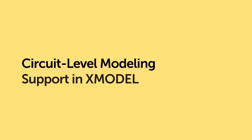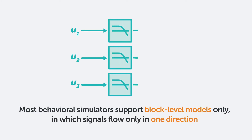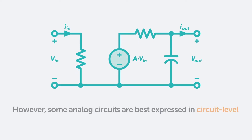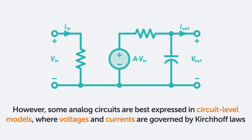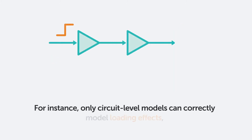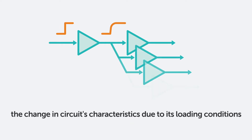Circuit-level modeling support in XModel. Most behavioral simulators support block-level models only, where the signals flow only in one direction. However, some analog circuits are best expressed in circuit-level models, where signals are described with voltages and currents governed by circuit equations. For instance, only circuit-level models can correctly model loading effects — the change in the circuit's response depending on the loading conditions.